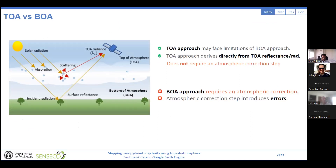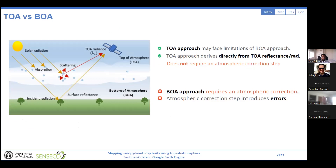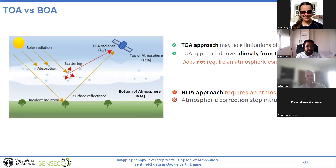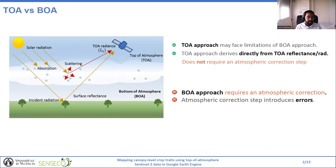First, a little background of this study. When we talk about retrieval methods, we have to take into account the type of remote sensing data we are using. At the top of the atmosphere, we have the TOA radiance — that is the signal captured by the sensor. The TOA data is affected by atmospheric conditions such as aerosol scattering, water vapor, or ozone concentration. On the other hand, we have the bottom of atmosphere data with the surface reflectance. This is the data used for most retrieval methods, but it requires an atmospheric correction step that can introduce important errors. Later in the presentation, we will explain how to use the TOA data directly, avoiding the atmospheric correction step.